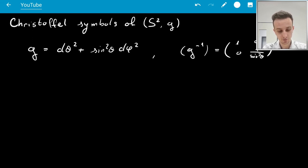So I've given the metric here and its inverse in matrix form. I'll recall that the Christoffel symbols are defined in index notation as the following.